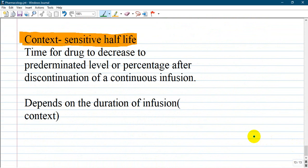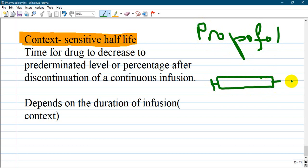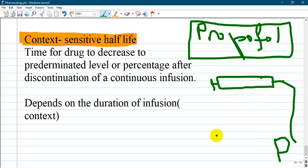Another important term for exam is context-sensitive half-life, which means time for drug to decrease to predetermined level or percentage after discontinuation of continuous infusion. For example, if you're giving a continuous infusion of propofol for a short time and discontinue at one time period, what is the change that patient will recover? Metabolism of propofol is very fast and recovery and waking of patient is fast. But it depends from one drug to another.